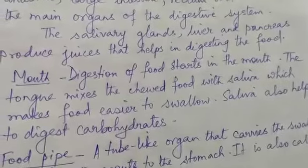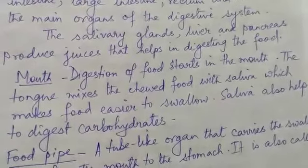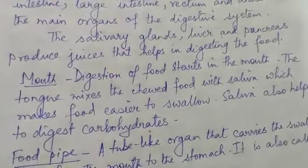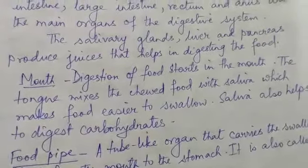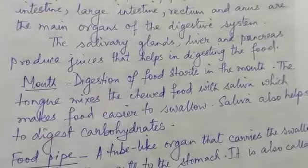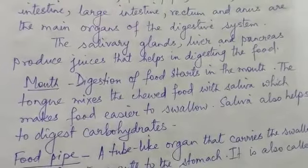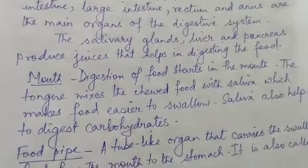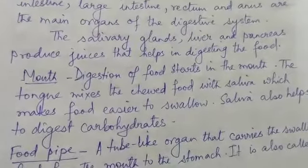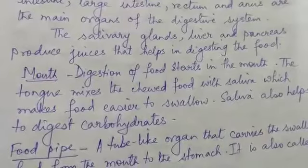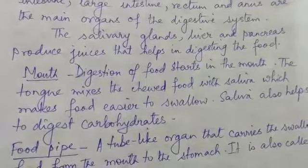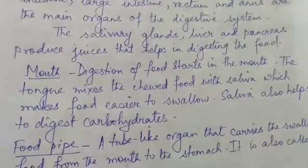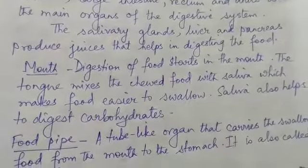The mouth: Digestion of food starts in the mouth. First you eat the food. The tongue mixes the chewed food with saliva, which is released by the salivary glands, so the food becomes easier to swallow. Saliva also helps to digest carbohydrates, so some digestion of carbohydrates is done in the mouth.